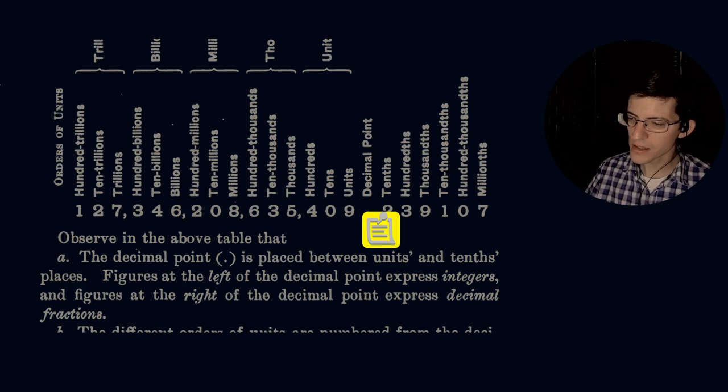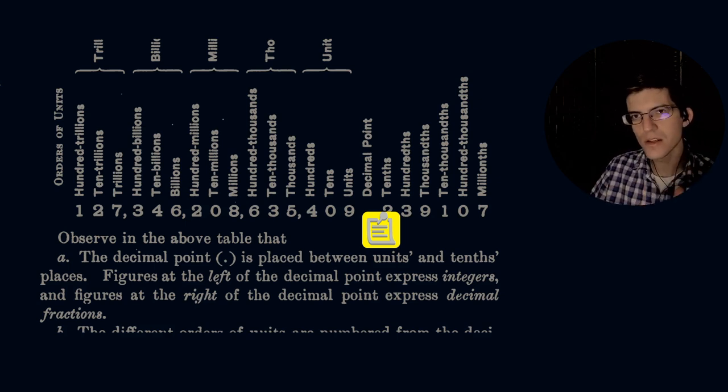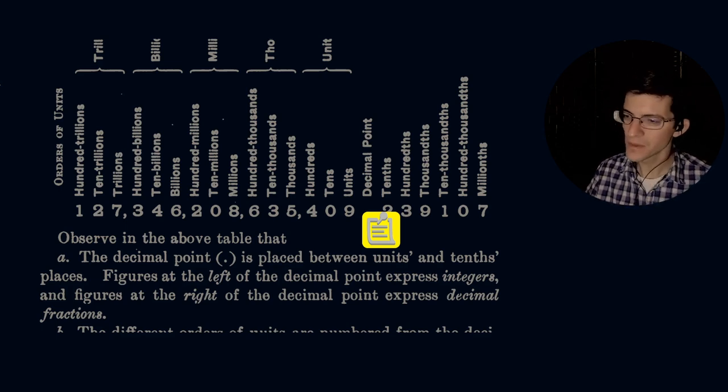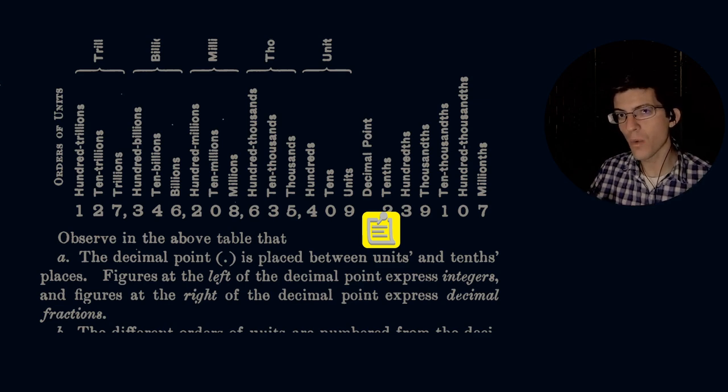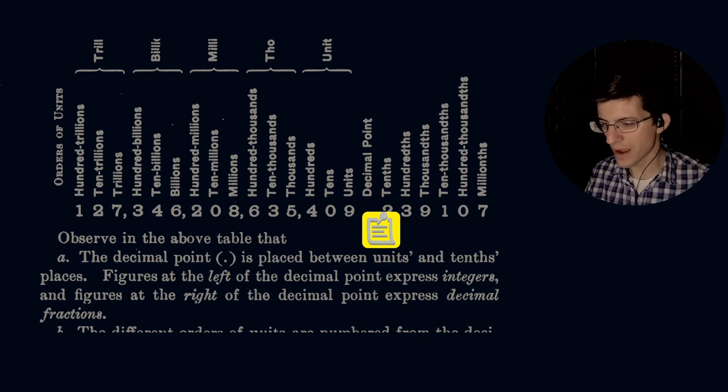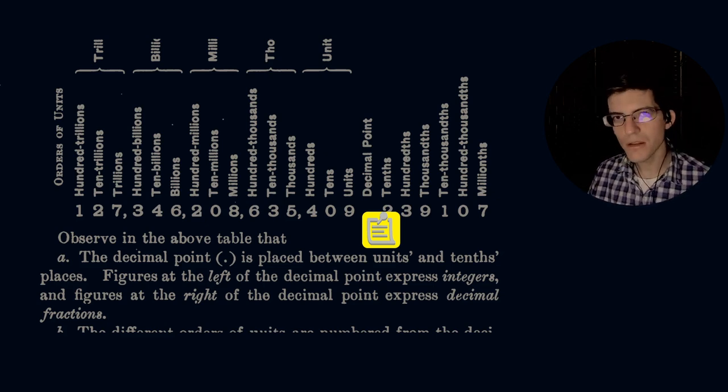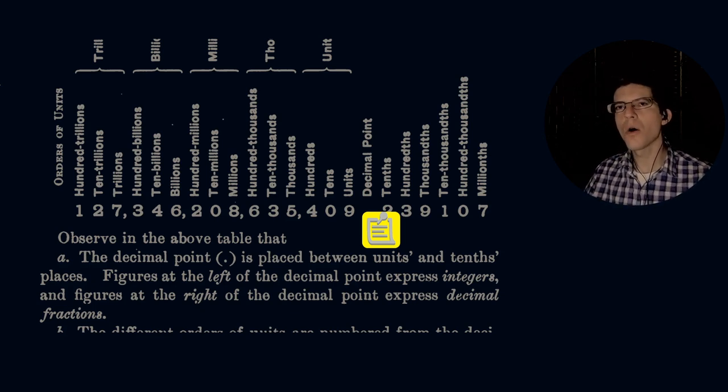Units to the right start off at tenths. So this is some unit that is a fraction of ten. Then hundredths, this would be some unit that is a fraction of one hundred. Thousandths, a fraction of a thousand. Ten thousandths, hundred thousandths, millionths, decreasing by a power of ten all the way until we get to negative infinity.